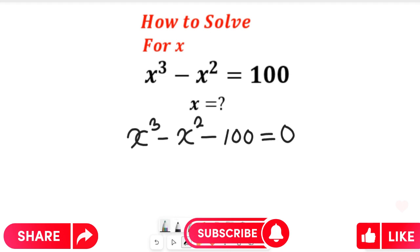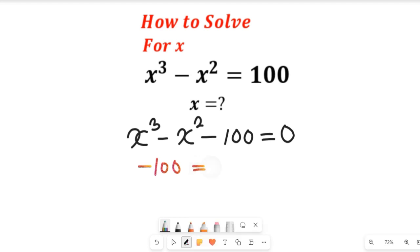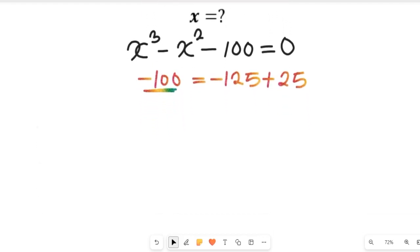Now let's look at this logic: minus 100 can be written as minus 125 plus 25, because 125 minus 25 gives us positive 100, and since 125 carries a negative sign it dominates. So we can replace negative 100 with negative 125 plus positive 25.